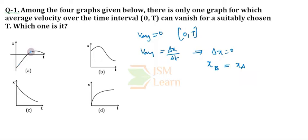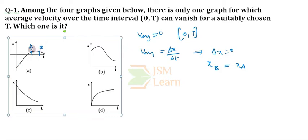Coming to Option A, the two points at the same level are possible — from here to here. Let this point be A and this point be B. When I look at the displacement, XA and XB are both equal. Since both displacements are equal, the total displacement will be 0, because XB minus XA equals 0.